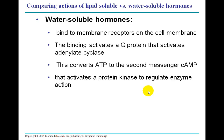The water-soluble hormones bind to membrane receptors on the cell membrane. The process of binding activates a G protein that activates a specific enzyme — in this case, adenylate cyclase — and this helps convert ATP to the second messenger cAMP, cyclic AMP. cAMP is adenosine monophosphate, not adenosine triphosphate. So we start with adenosine triphosphate, release energy, and take two phosphates off to bring it down to AMP, which is monophosphate. This process activates a protein kinase to regulate enzyme action in the cell. That's the process a water-soluble hormone takes.